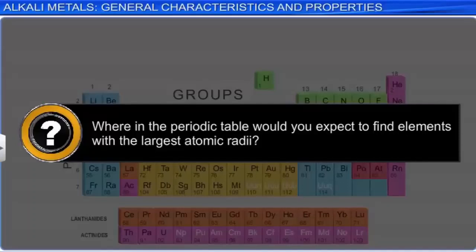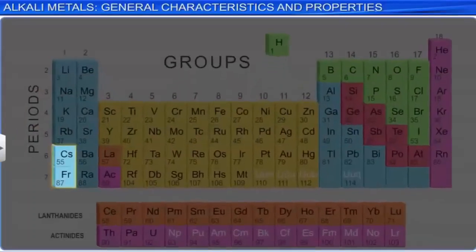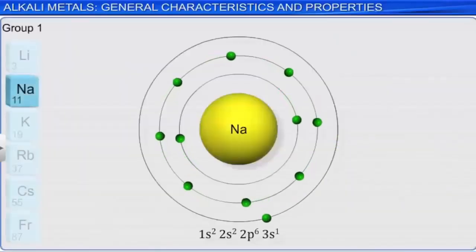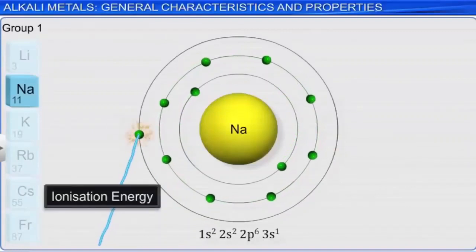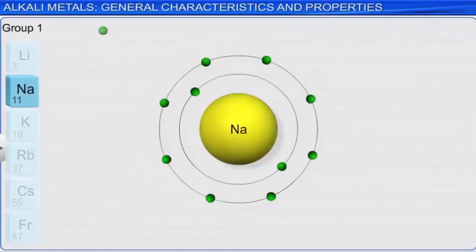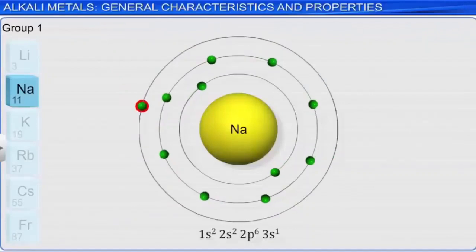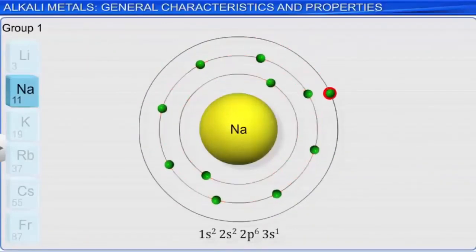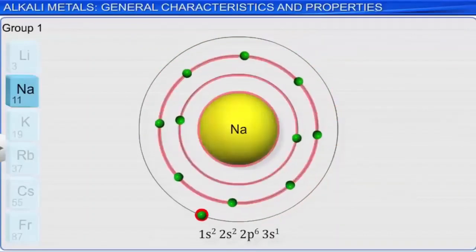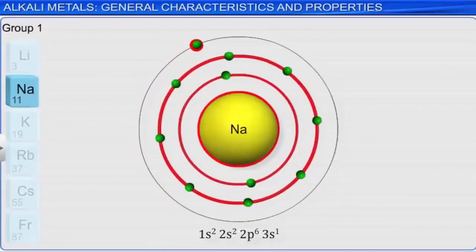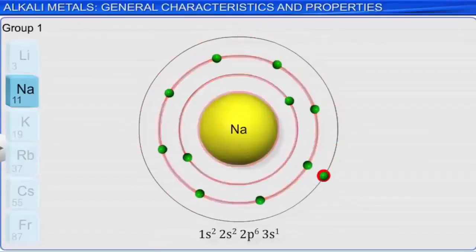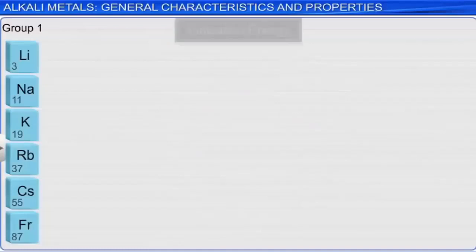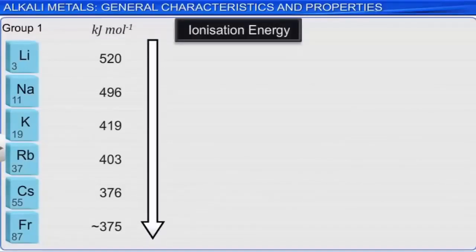The largest atoms are found in the lower left-hand corner of the periodic table—cesium and francium. Ionization energy is defined as the energy required to remove the outermost electron from an isolated gas-phase atom. Since the valence electrons are significantly shielded from the nuclear charge, the ionization energies of the alkali metals are relatively low. In general, ionization energies decrease down a column, and the alkali metals are no exception.